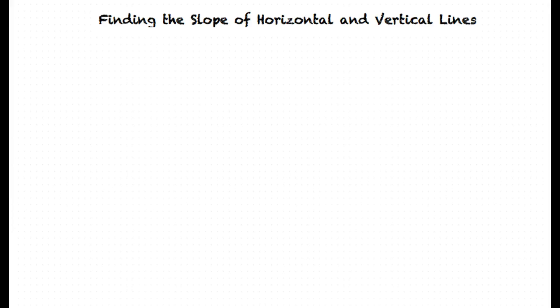This video will cover the topic of finding the slope of horizontal and vertical lines. For finding the slope of any line, we can pick any two points on the line and use the formula y2 minus y1 divided by x2 minus x1.